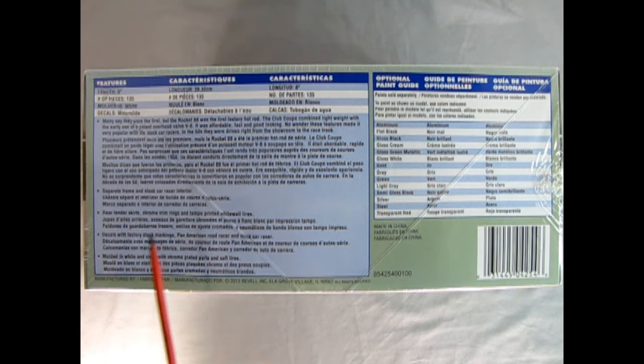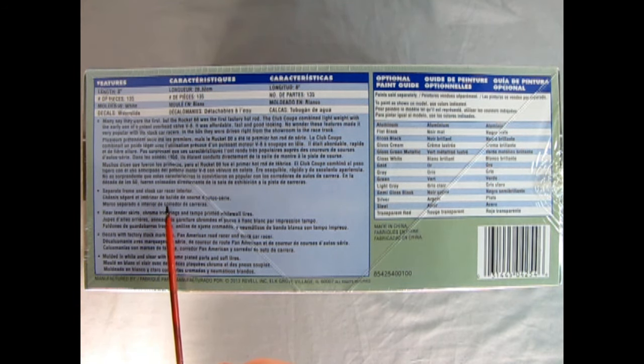On this side of the box we actually have the features of the car. It is eight inches long, has 135 pieces, molded in white with waterslide decals. It also contains French and English here so you can read it in multiple languages, has separate frame and stock car racing interior, rear fender skirts, chrome trim rings, and tampo printed white wall tires.